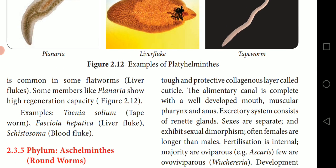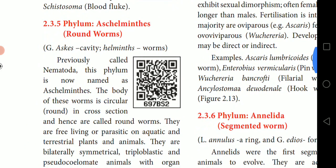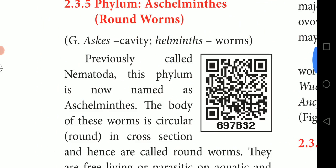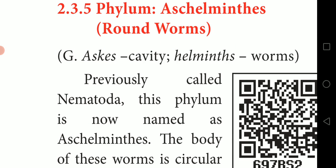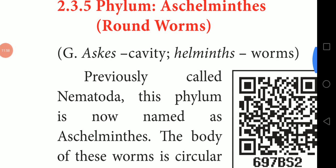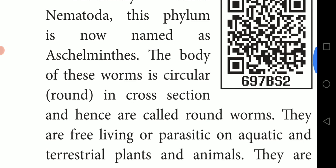The next topic is Phylum Aschelminthes, also called roundworms. It is a Greek word: 'askos' means cavity, 'helminthes' means worms. This phylum was previously called Nematoda. The body of these worms is circular in cross-section — if you cut these animals and observe, you find a circular cross-section — hence they are called roundworms.